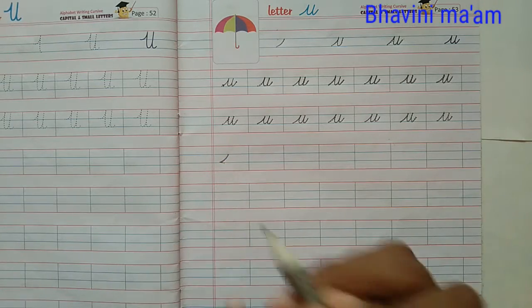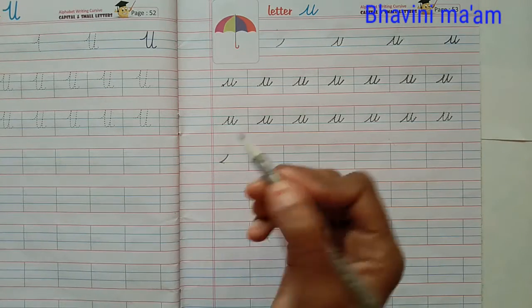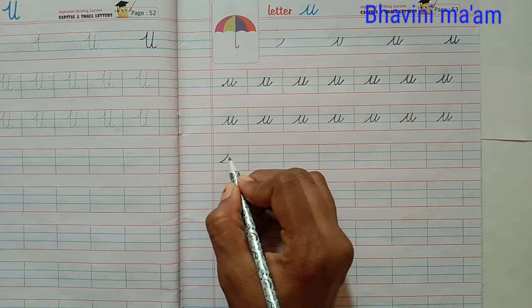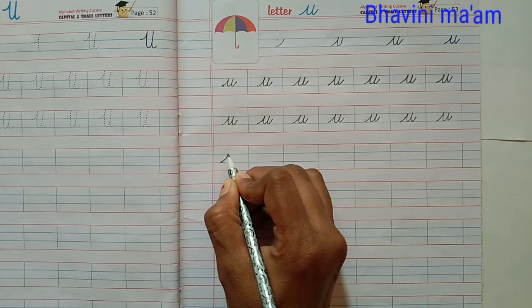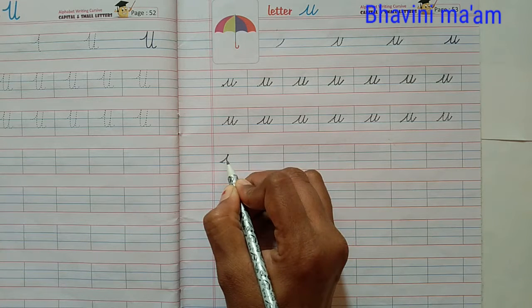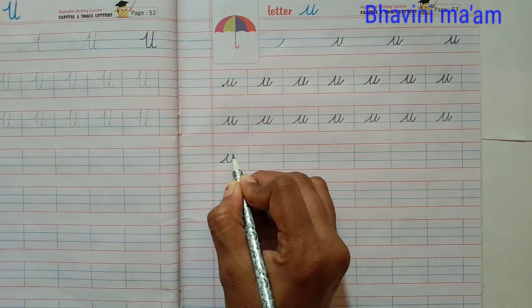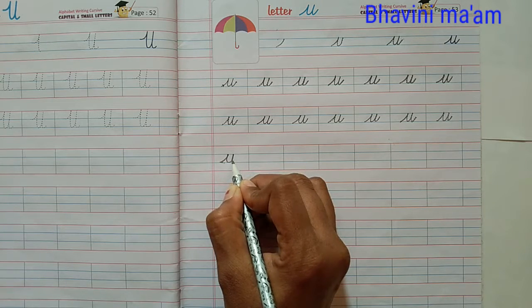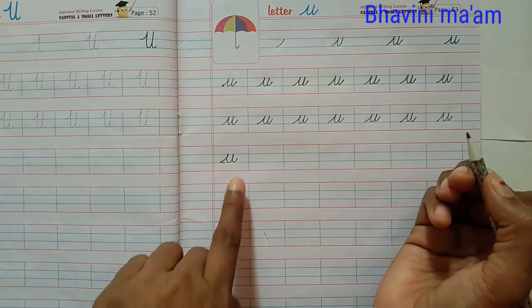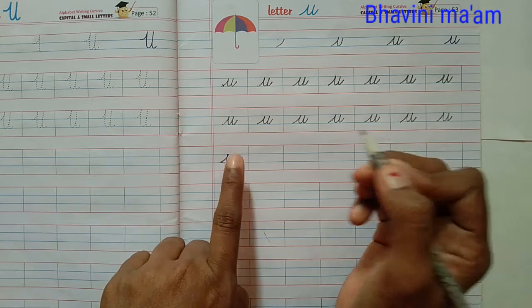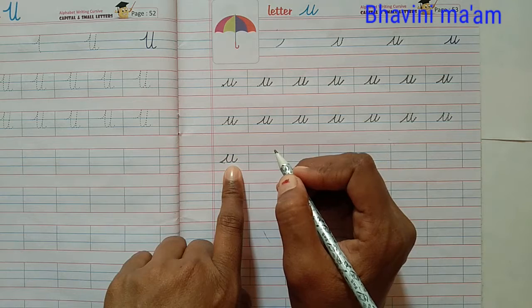First step complete. Then you don't lift your pencil. Teacher is showing you like this. And then this up curve you have to make. Then we come back on the same line down and this slanting line make. Which letter is this? U. For umbrella.